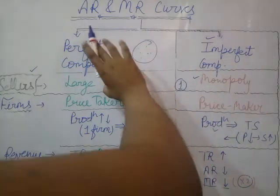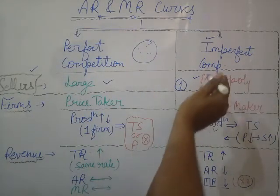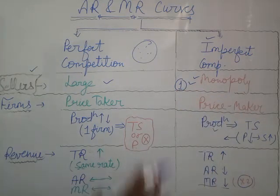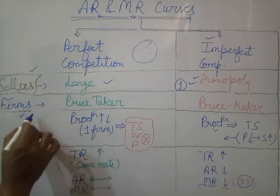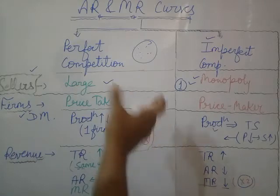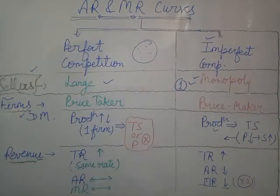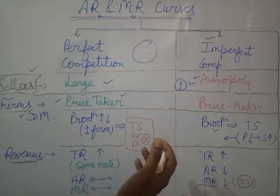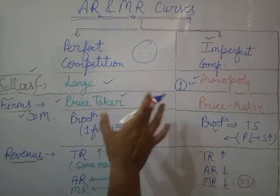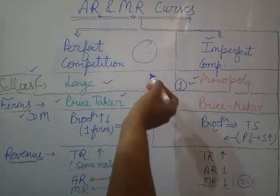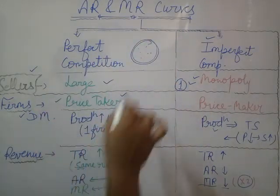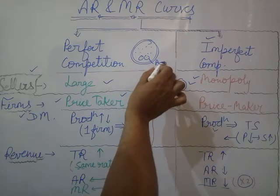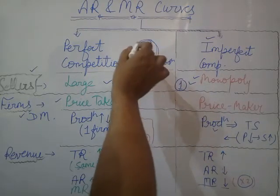The second parameter is related to the decision making of firms. In case of perfect competition, firms are price takers. Being a price taker means that if a firm increases or decreases production, it will not have any significant impact on the market price.